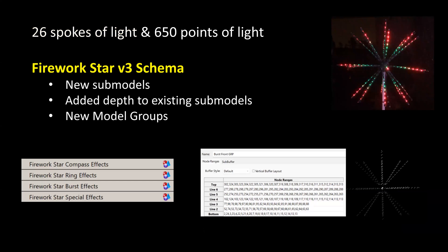This X model is based on a version 3 schema. This is a little more advanced than the version 1 and version 2 schematics that have been shared previously for some of the other Fireworks stars. What makes this schema different is I've added some additional submodels. There is depth added to many of the existing submodels, so when you run the effects, you can do some additional interesting render capabilities that you weren't able to do before. I took a number of the existing model groups and migrated them to become submodels themselves.